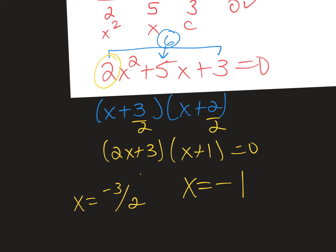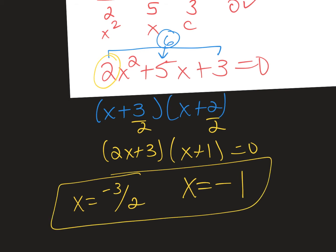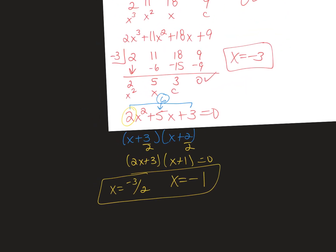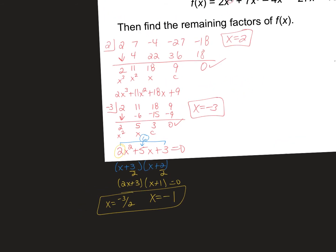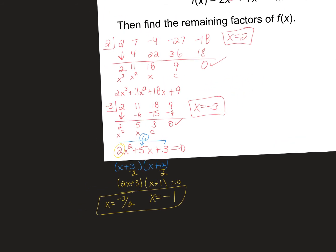After we use synthetic division once or twice, we hope to get to a point where we can just factor. Are we at that point? Yes. What are factors of 6 that multiply to give me 6 but add to give me 5? 3 and 2. So I'm left with 2x + 3 and x + 1. My two final zeros are x equals negative 1 and negative 3 over 2. If you have to physically move the 3 over and divide by 2, do that. Don't make a silly mistake.